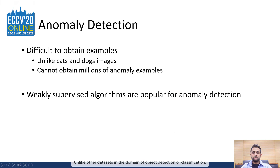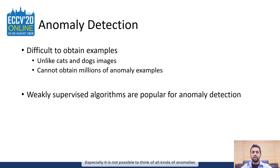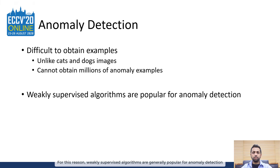Unlike other datasets in the domain of object detection or classification, it is not easy to obtain anomaly examples. Especially, it is not possible to think of all kinds of anomalies and obtain training examples for each class. For this reason, weakly supervised algorithms are generally popular for anomaly detection as they can at least save the costly procedures of obtaining fine-grained labels.